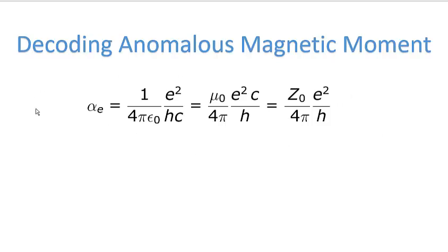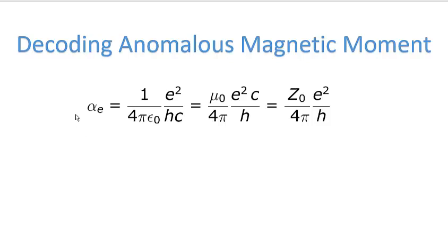What is free space? Free space is space without matter — space free of matter. What we're talking about here is the ether: the ether is space in the absence of matter. So the permittivity, permeability, and impedance of free space are all about the ether — the medium for the propagation of light.